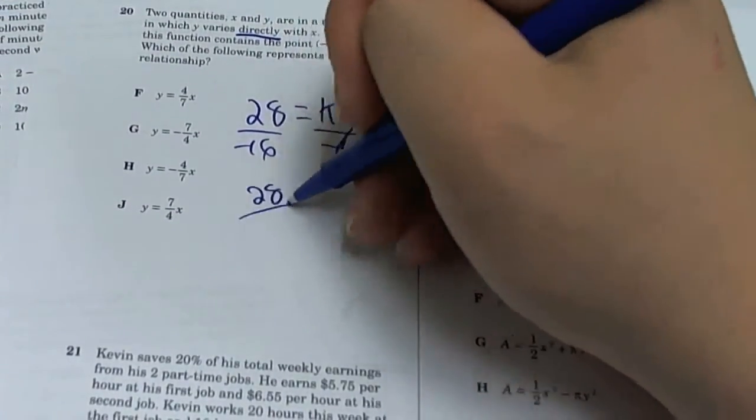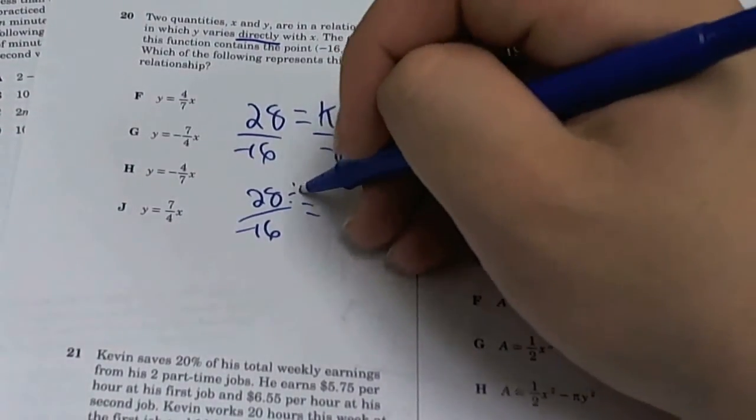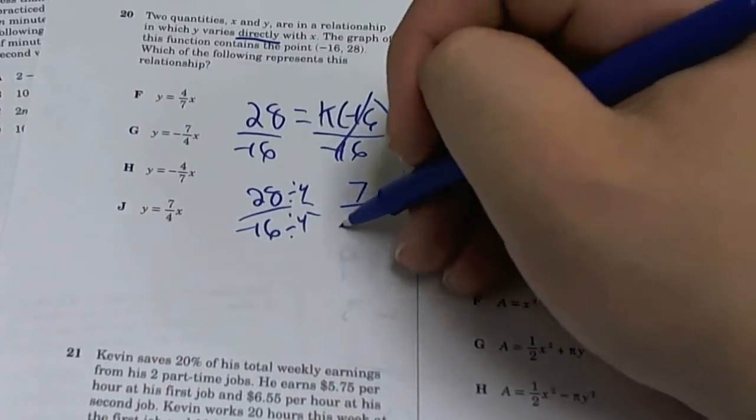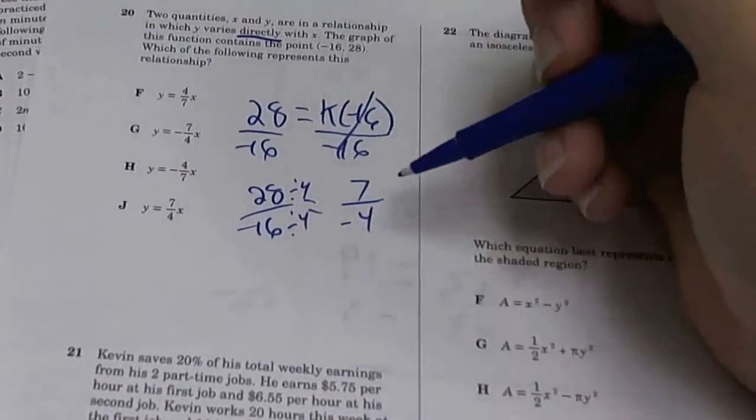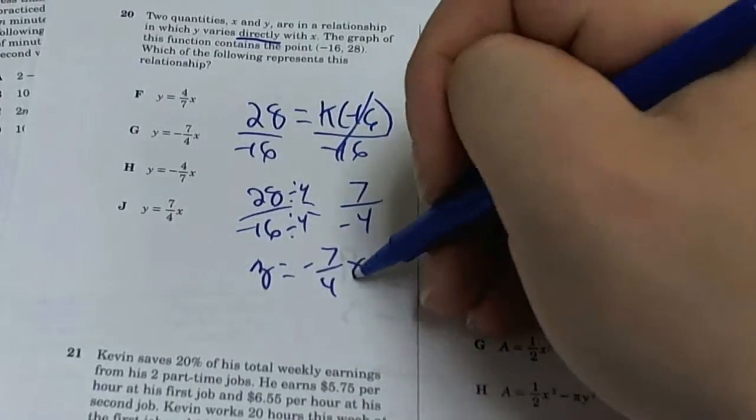You're left with 28 over negative 16. You reduce this, take out a 4. I divide by 4, I divide by 4. Left with 7 over negative 4. So K is negative 7/4. So Y is equal to negative 7 over 4 X.